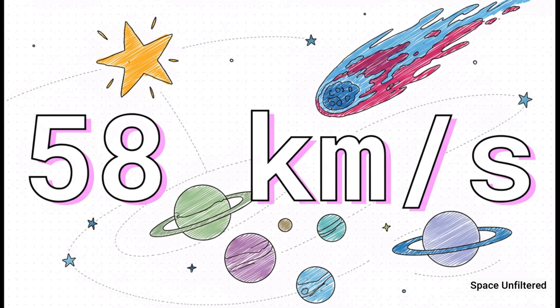This represents its hyperbolic excess velocity, the speed it will have relative to our sun long after it escapes its gravity. At 58 kilometers per second, it is moving far too fast to have ever originated from within our solar system. There's no known gravitational interaction with our planets that could have accelerated an object to this kind of speed.